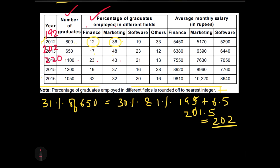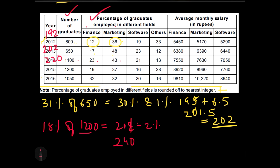Now for 2015, we have 37 minus 19, which gives 18. So I need 18% of 1200. I can do this as 20% minus 2%: 20% of 1200 is 240, and 2% of 1200 is 24. Subtracting, 240 minus 24 gives 216. So the number for 2015 is 216.